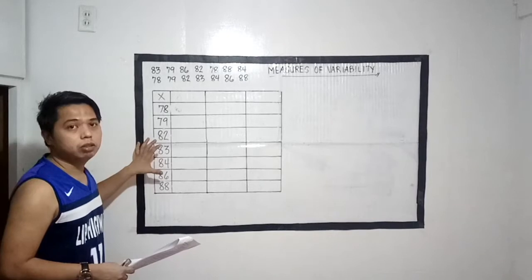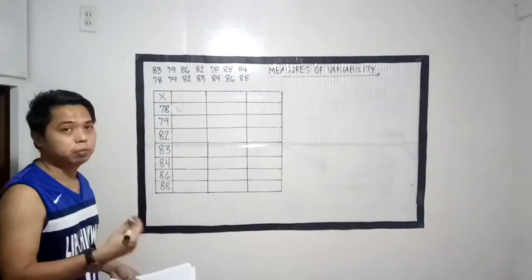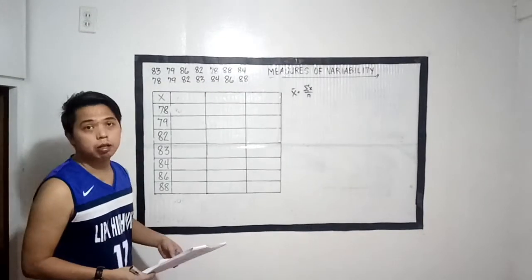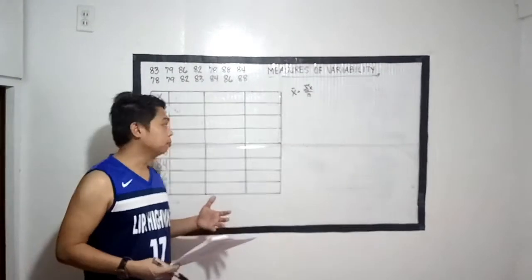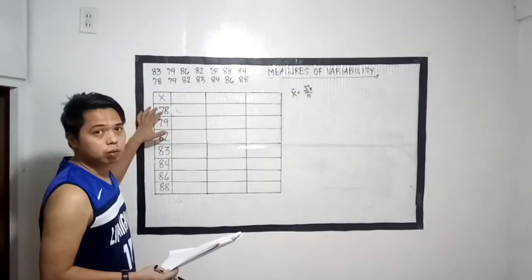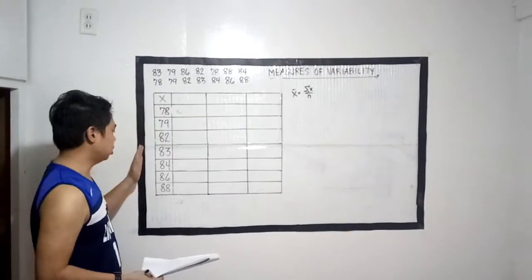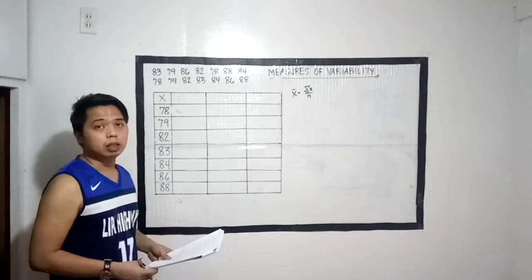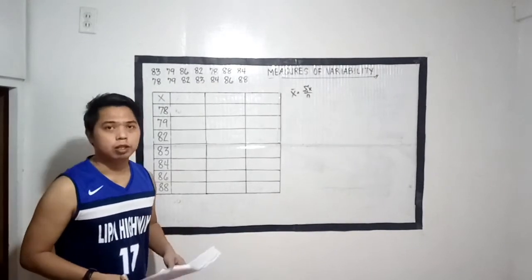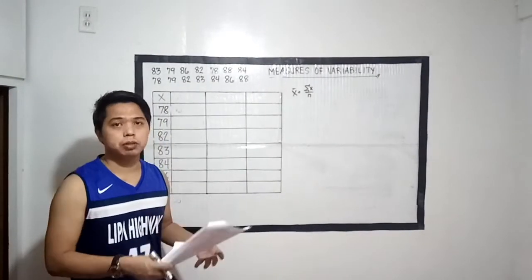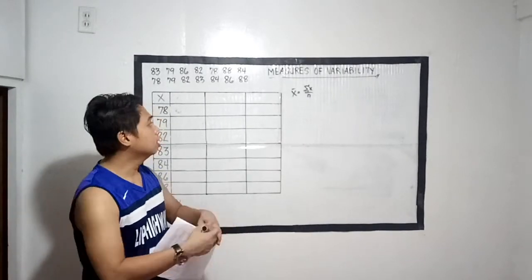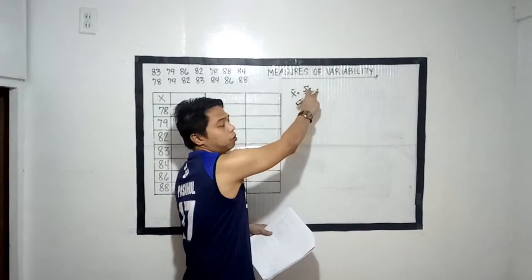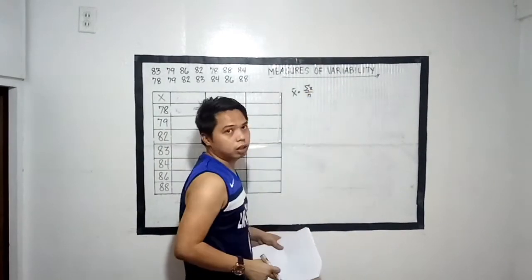Itong data na ito yung gagamitin natin para makapag-proceed sa measures of variability. After nating ma-fill up yung ating first column at malagi yung mga scores natin, all we have to do is to get our mean. Para makuha ang mean — naturo ko na yun sa previous lessons natin sa ASL — we need to get the summation of x over n.